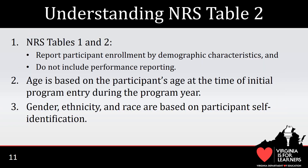Considerations for calculating the totals on NRS Table 2 are similar to those for calculating totals on NRS Table 1, except instead of aggregating gender, race, and ethnicity information by EFL, the information is aggregated by age range. Age is based on the participant's age at the time of program entry for the fiscal year.